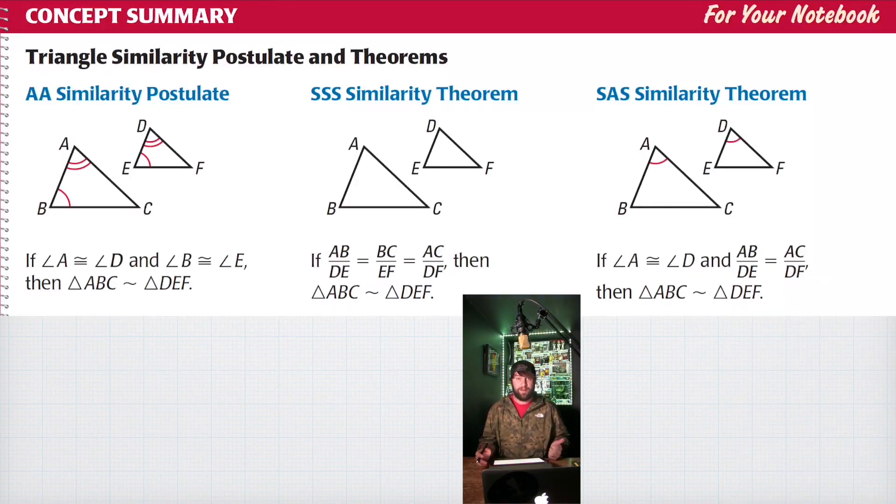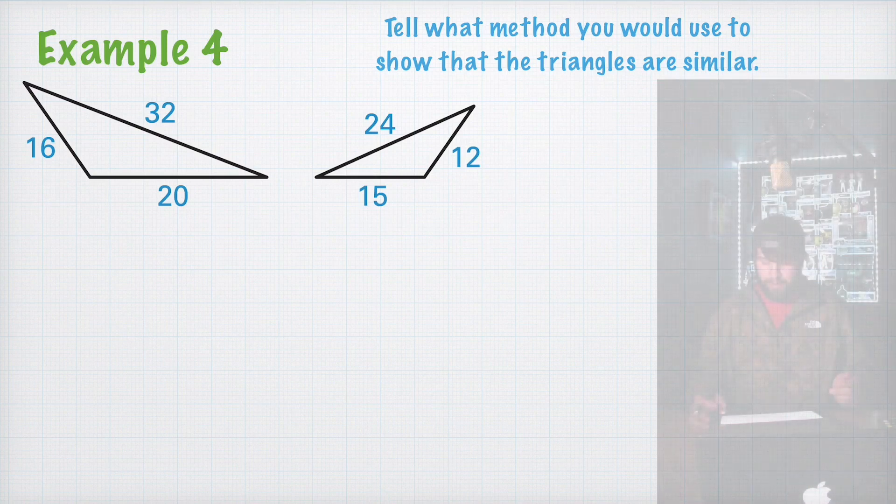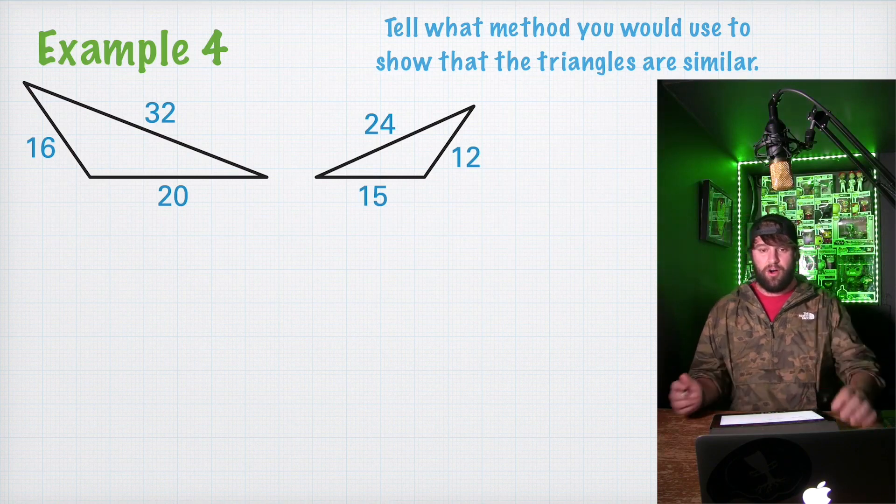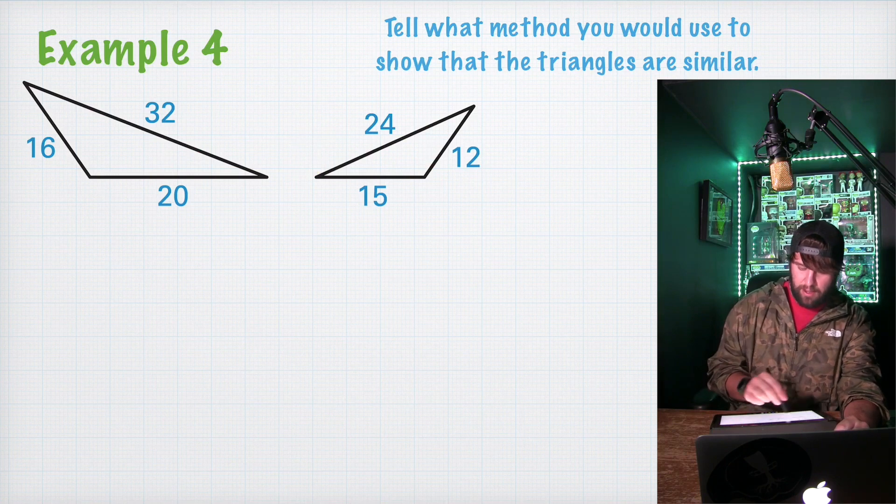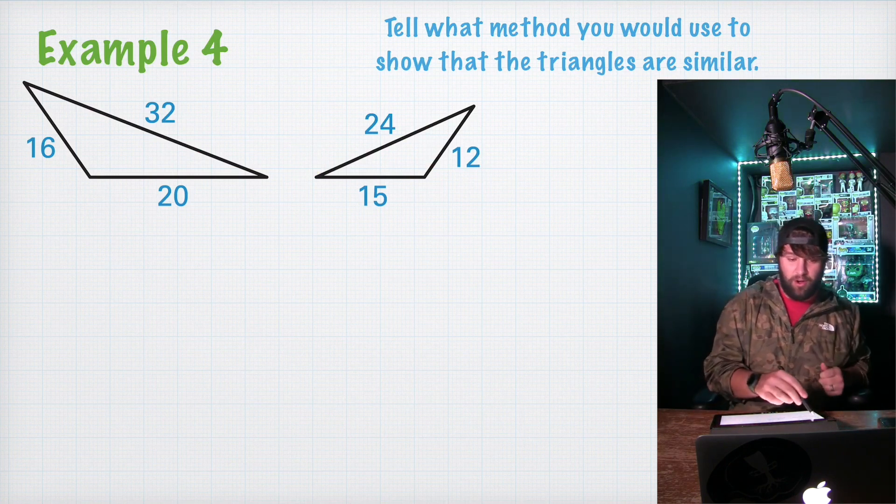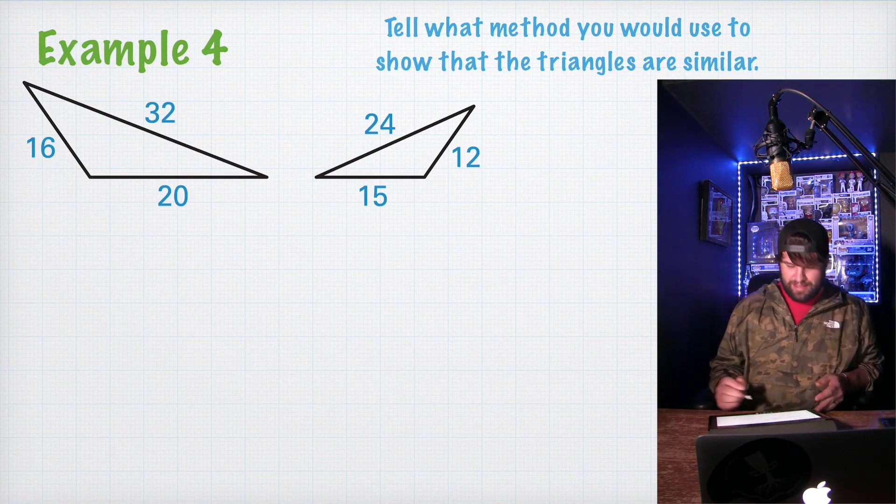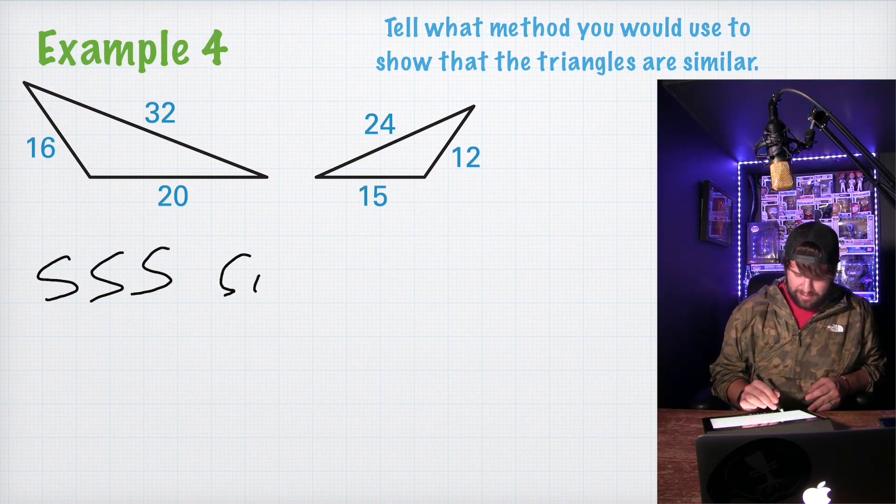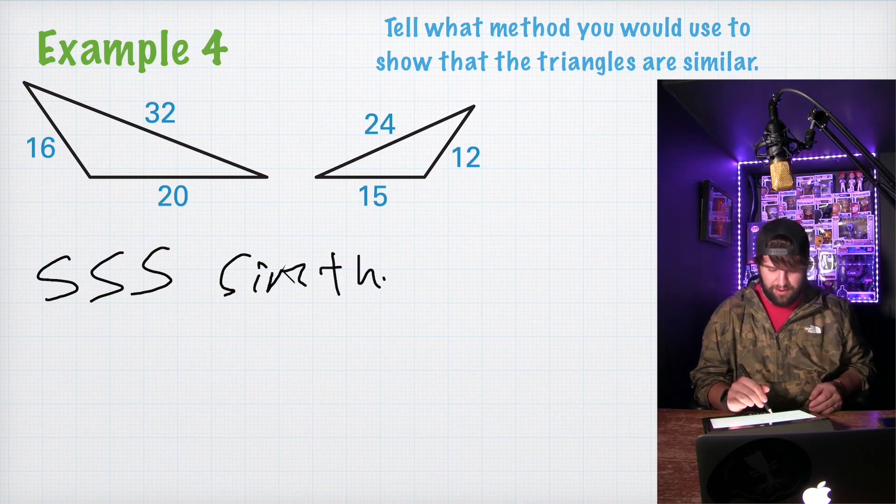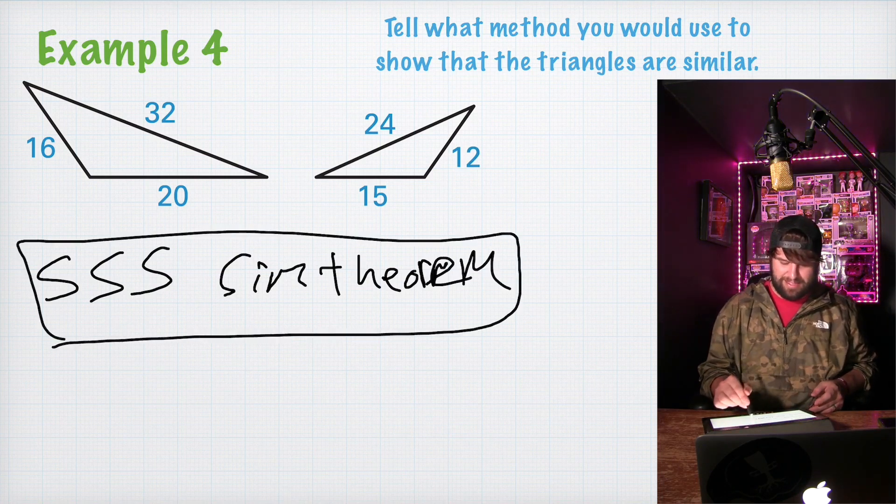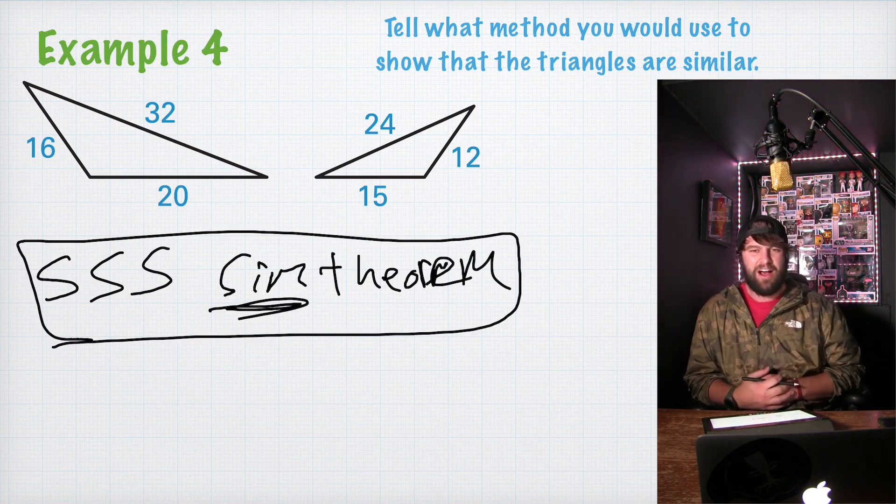So far in this chapter, we have learned three ways to prove triangles are similar. The AA similarity postulate, the SSS similarity theorem, and the SAS similarity theorem. Example 4, they want to tell what method you would use to show that the triangles are similar. So we have two triangles here. And the only information we have is all the side lengths. So there's really only one option to show that these two triangles are similar. And that's the SSS similarity theorem. That's it, guys.